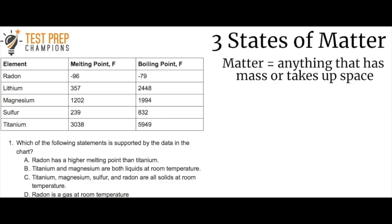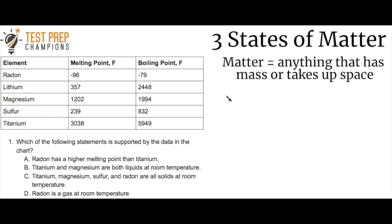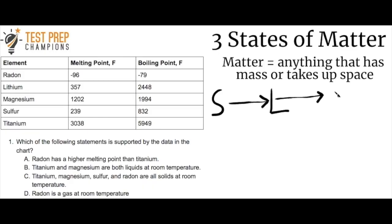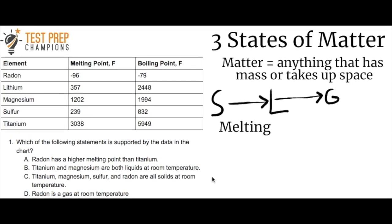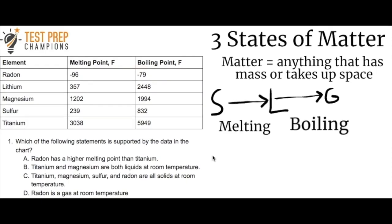Matter is anything that has mass or takes up space. So let's say we start with a solid (S), and that solid can become a liquid (L), and then that liquid can become a gas. What do we call it when a solid becomes a liquid? We call that melting. And when a liquid becomes a gas, we call that boiling.